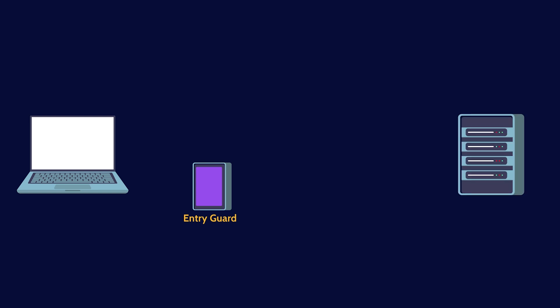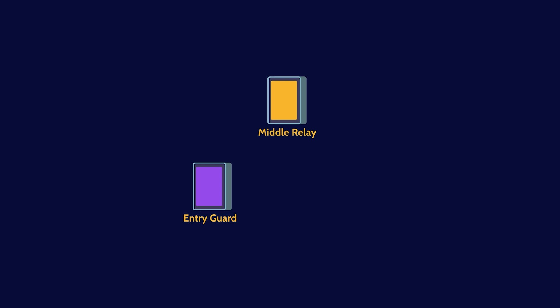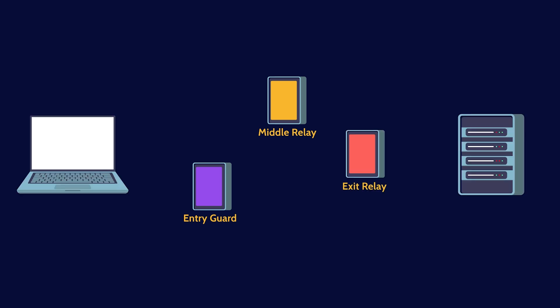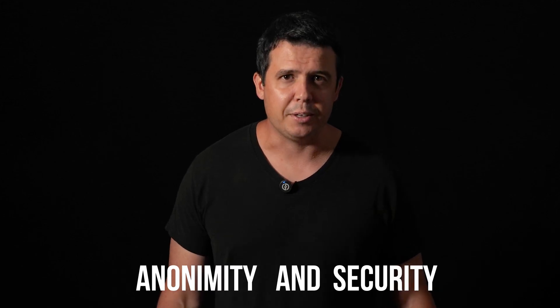This layered approach ensures that no single relay knows both the source and the destination. Even if an attacker compromises one of the relays, they still only get partial information. The entry relay knows your IP, but not where you're going. The middle relay knows neither your IP nor your destination. And the exit relay knows just the destination, but not your IP. Tor's layered encryption makes it incredibly difficult to trace your internet activity directly back to you, providing a high degree of anonymity and security.